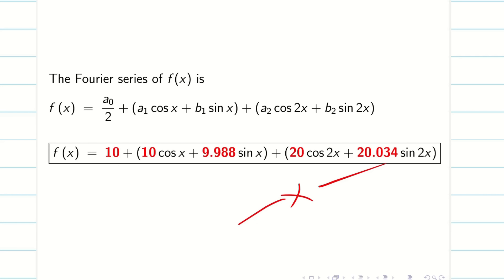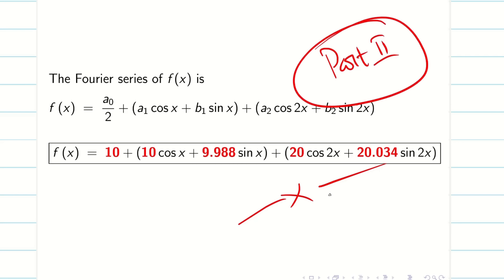In this video, we saw two different forms: pi form and theta form (degree form). In the next video — part 2 — we will see L form and capital T form. Thanks for your patience, students. Subscribe to our channel and share so everyone can benefit. Good luck and bye-bye.